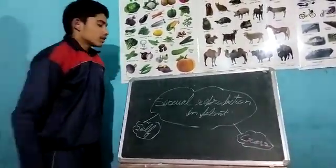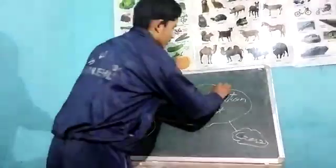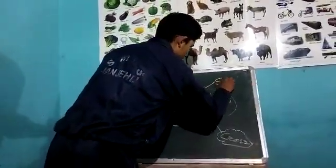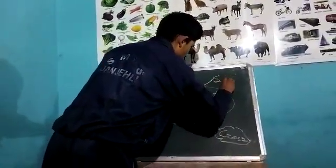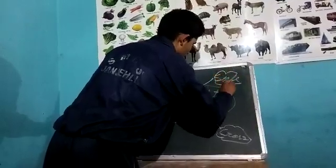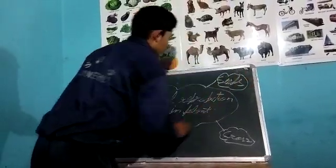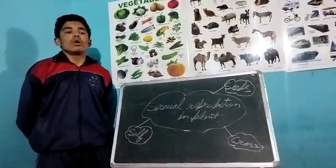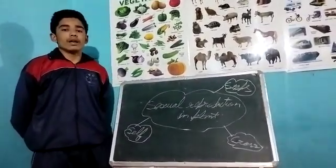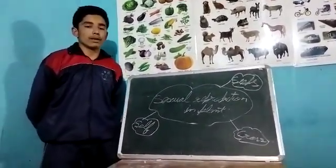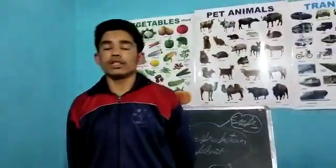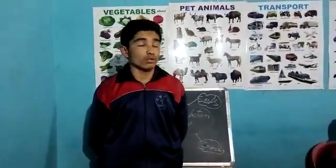Next is the third part: seeds. Seeds are transferred by air, by water, and by animal. Thank you dear friends. This is all about sexual reproduction in plants.